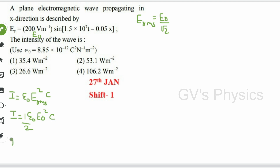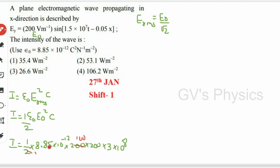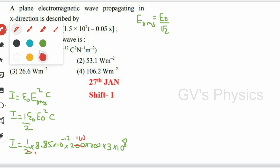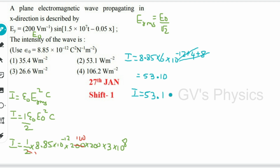Now we substitute the values: I = (1/2) · ε₀ · E₀² · c, where ε₀ = 8.85 × 10⁻¹² and E₀ = 200, and c = 3 × 10⁸. So 200 × 200 = 40000, giving four zeros (10⁴). Then 8.85 × 2 × 3 = 53.10, and the powers of 10 cancel (10⁻¹² × 10⁴ × 10⁸ = 10⁰). So I = 53.1 W/m².